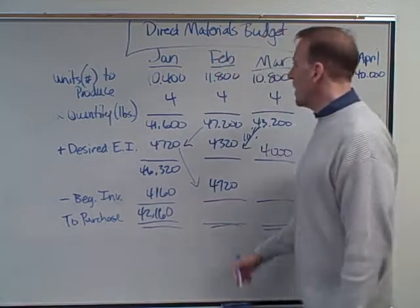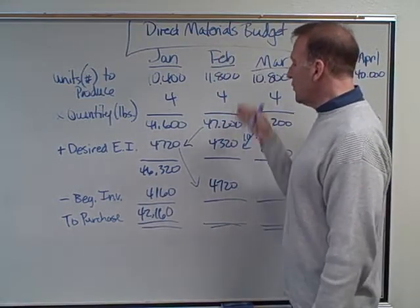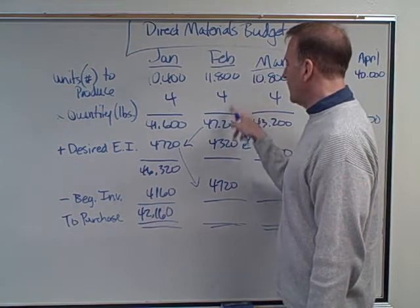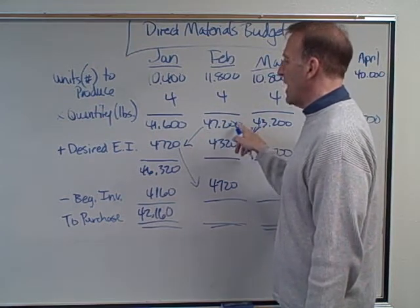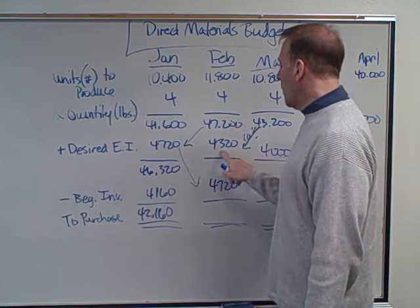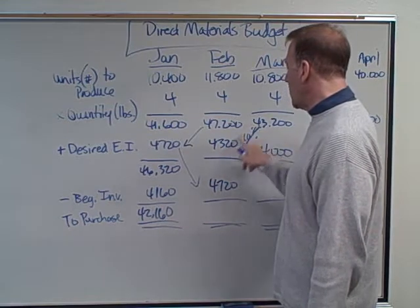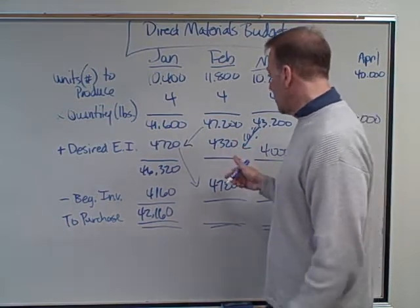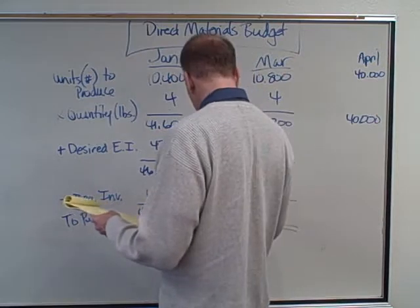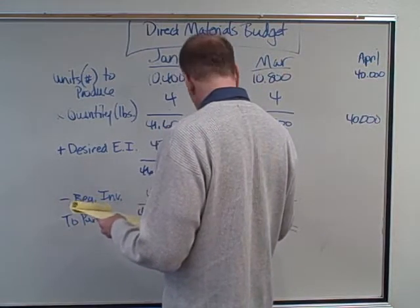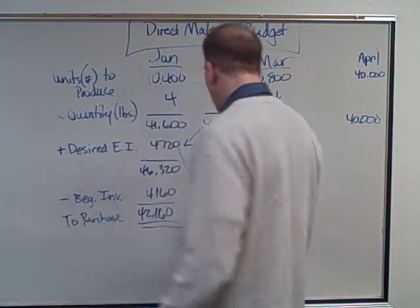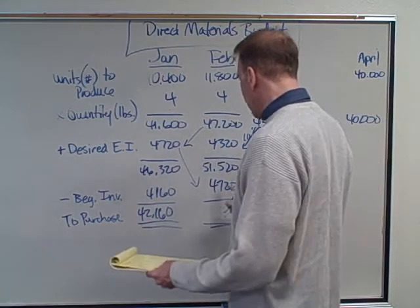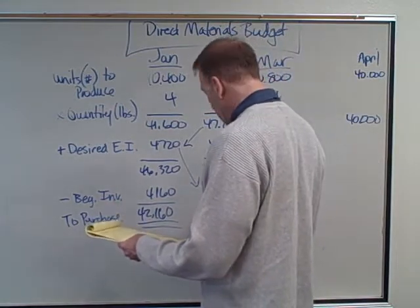For February: 11,800 times four equals 47,200 pounds. We want a desired ending inventory of 4,320. Total needs are then 51,520 pounds. We already have beginning inventory of 4,720 from January's ending, so we subtract that out and get 46,800 pounds to purchase in February.